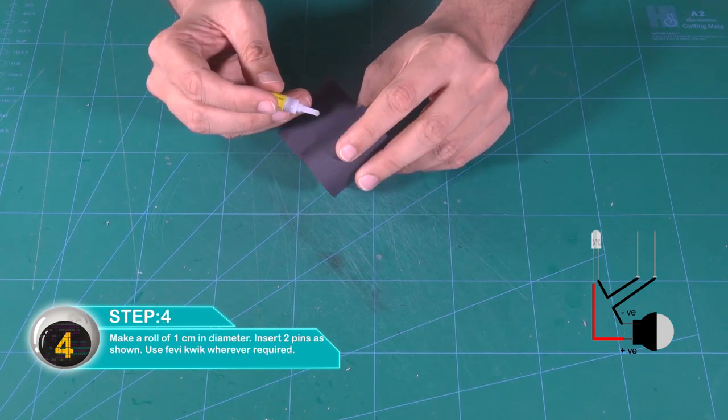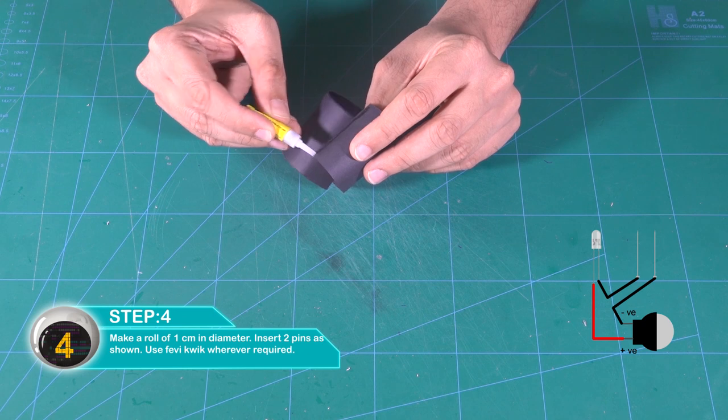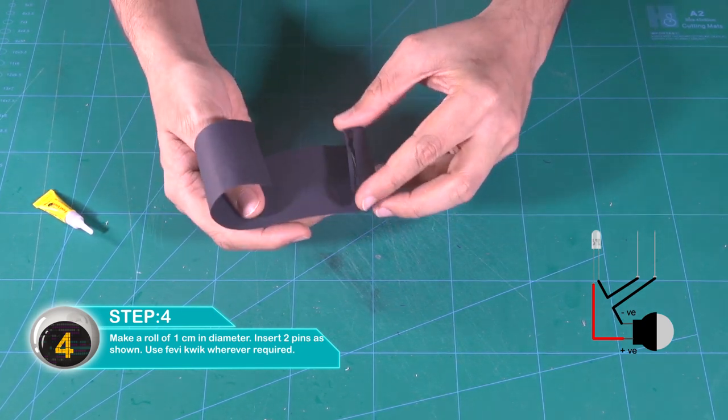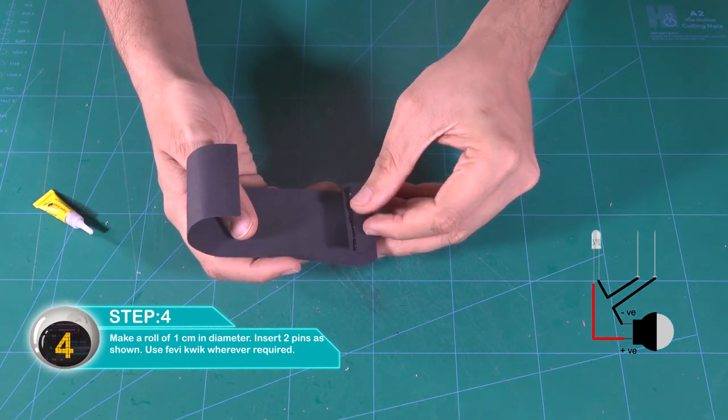Make a roll about one centimeter in diameter. Insert two pins between one length and the ends as shown. Use glue wherever required.